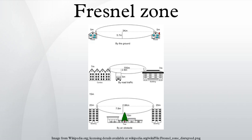In optics and radio communications, a Fresnel zone, named for physicist Augustin Jean Fresnel, is one of a number of concentric ellipsoids which define volumes in the radiation pattern of a circular aperture.